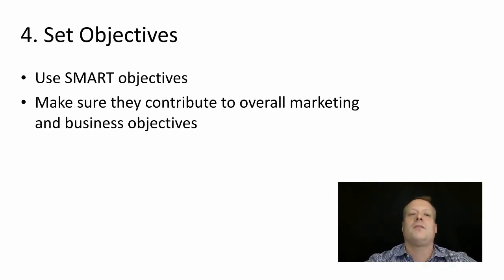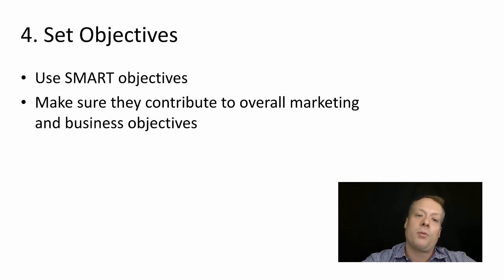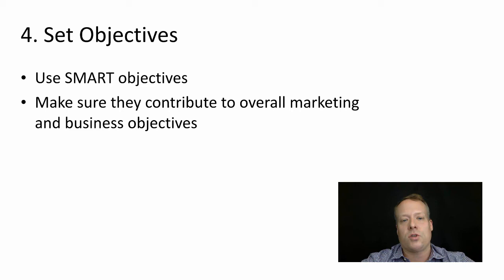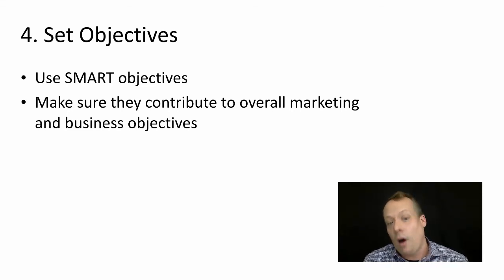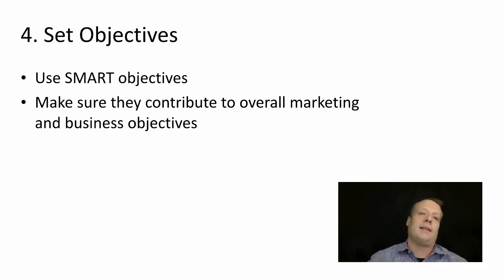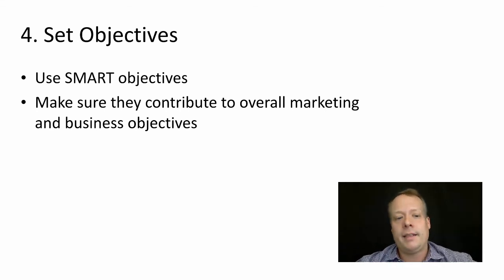The next step is to set your objectives. You want to use SMART objectives — Specific, Measurable, Assignable, Realistic, and Time-bound — particular goals for your social media that you can achieve in a given timeframe or on a recurring basis. Most importantly, your digital social objectives need to contribute to both your overall marketing objectives and your business bottom line. There's no point spending a lot of time on social if it's not supporting a business outcome or goal you can measure.